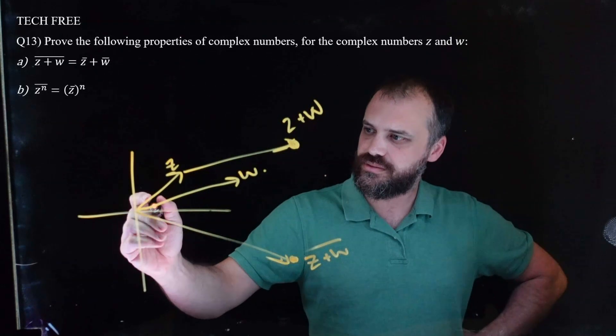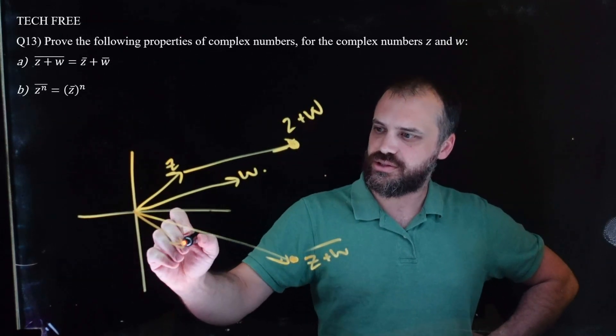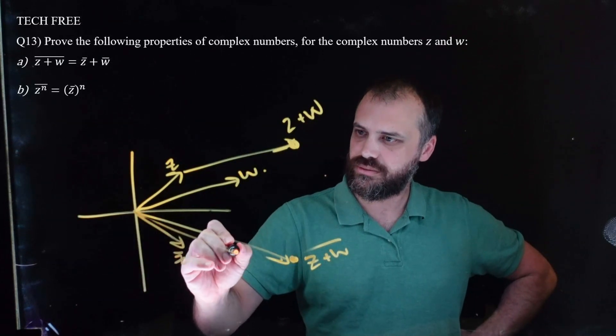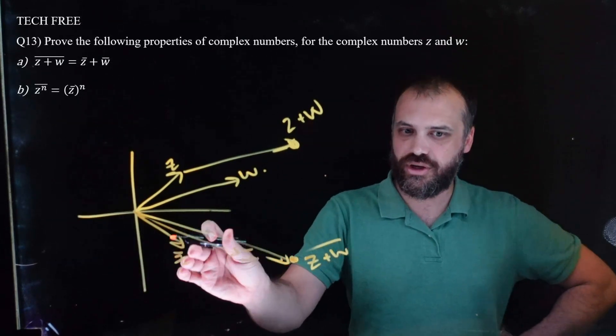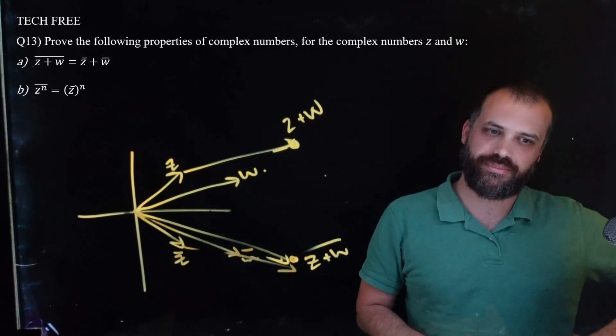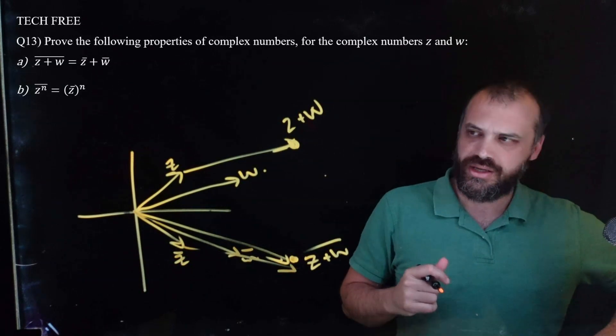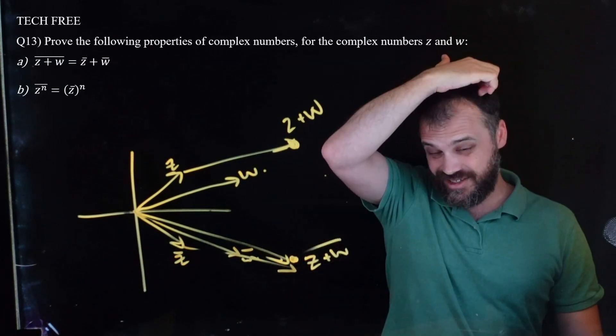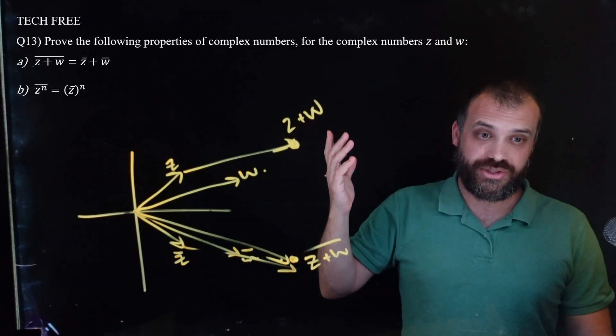Okay. If I take the conjugate of Z plus W, which is what this is, right, that's down here. Right. It's a reflection over the x-axis. That is the conjugate of Z plus W. Okay. Now, the right-hand side, the conjugate of Z, that's the conjugate of Z. The conjugate of W, if I add those together, conjugate of Z, conjugate of W, I end up in the same place. Hopefully, you can see that. So, as a picture, it works, but that doesn't help us at all. I just wanted to show it to you because I think it's cool.